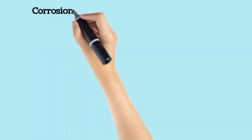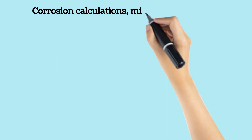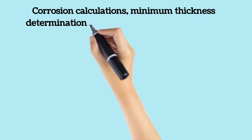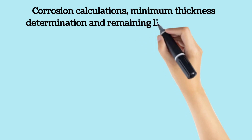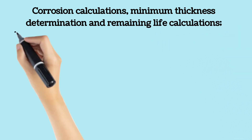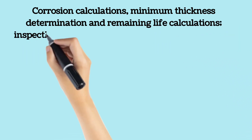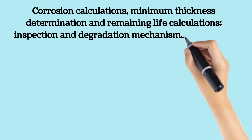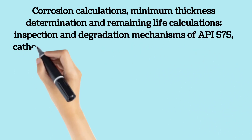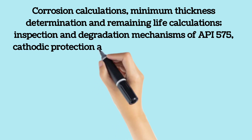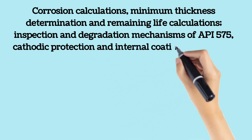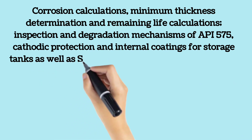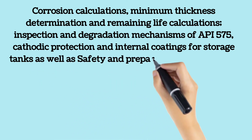Corrosion calculations, minimum thickness determination and remaining life calculations, inspection and degradation mechanisms from API 575, cathodic protection and internal coatings for storage tanks, and safety and preparation issues on tank floors for repair are main contents of the API 653 certification exam. Damage mechanisms from API 571 are also a part of the exam.